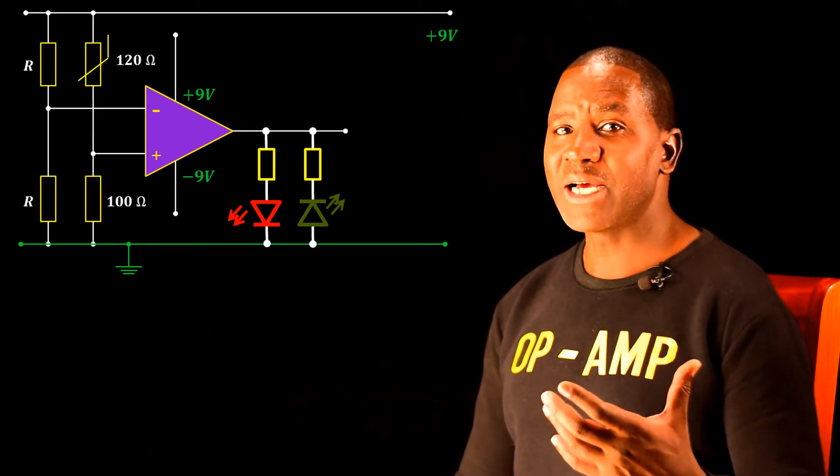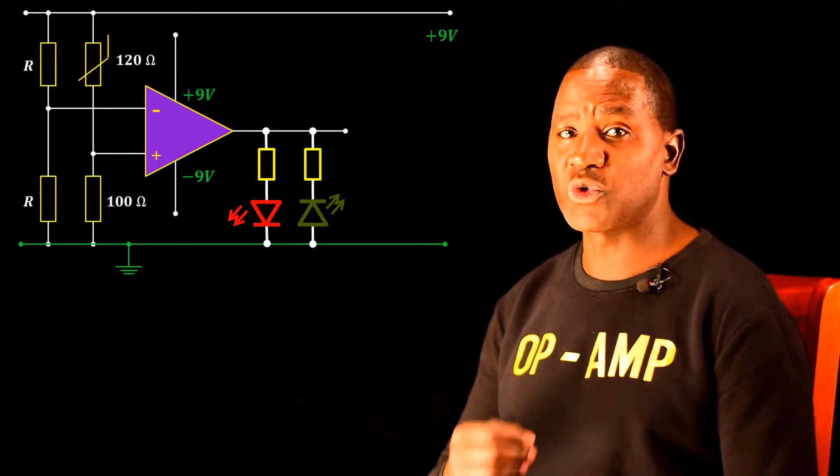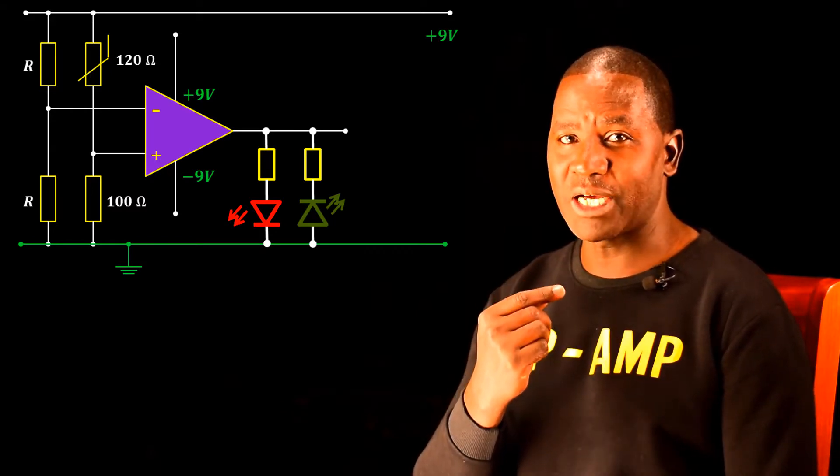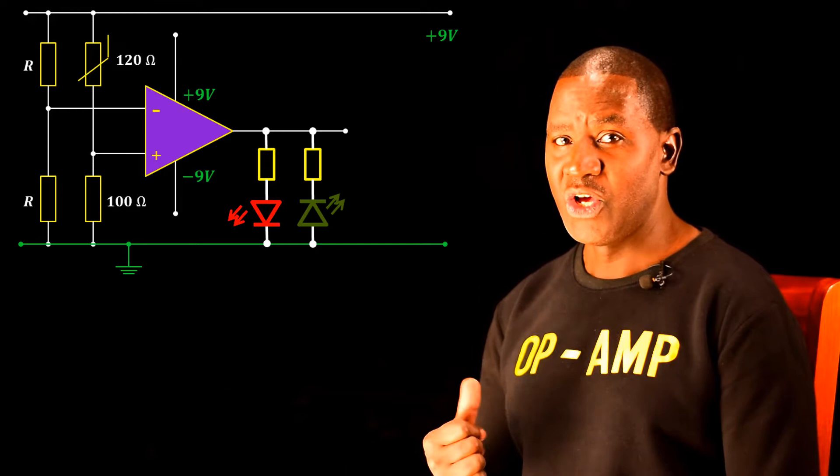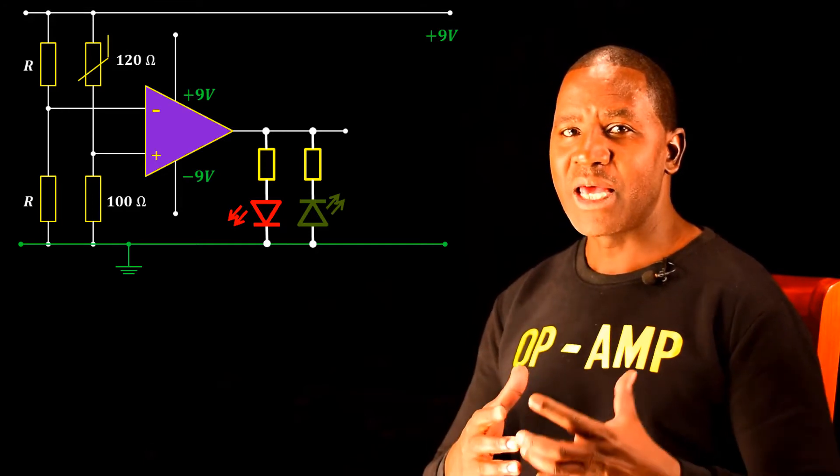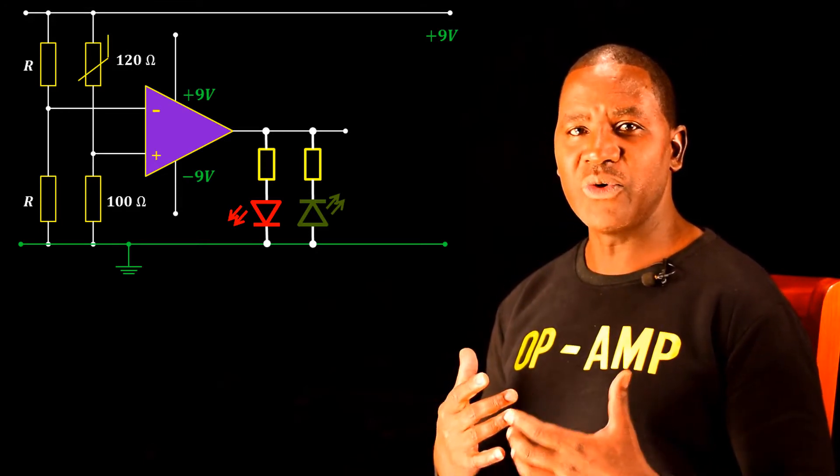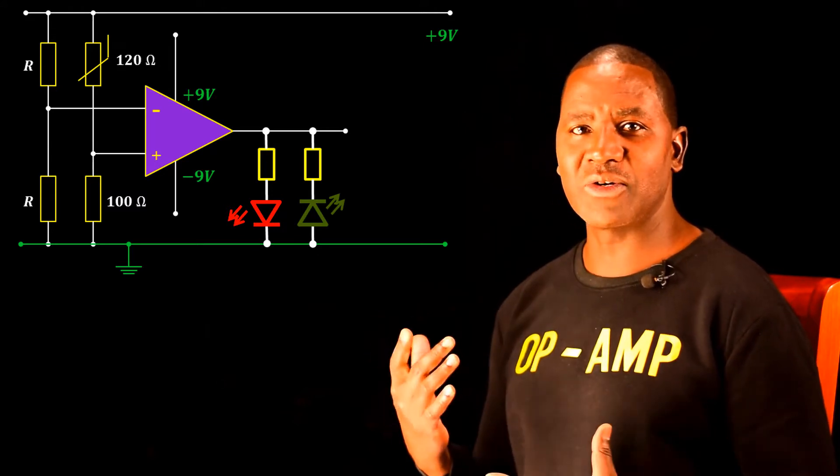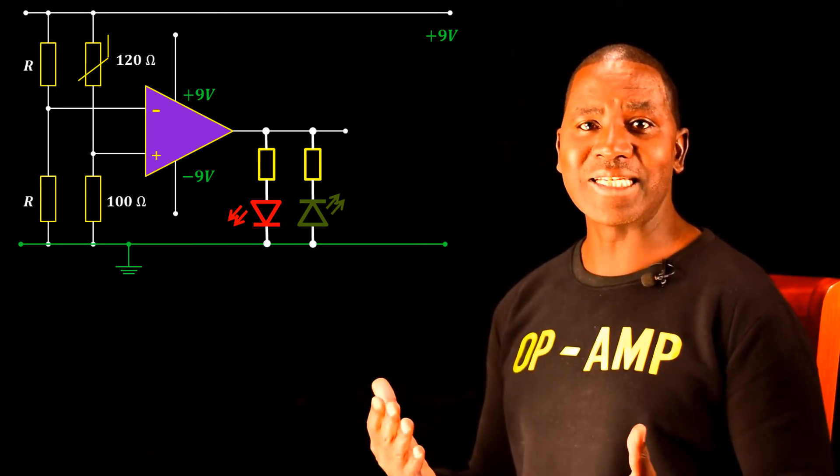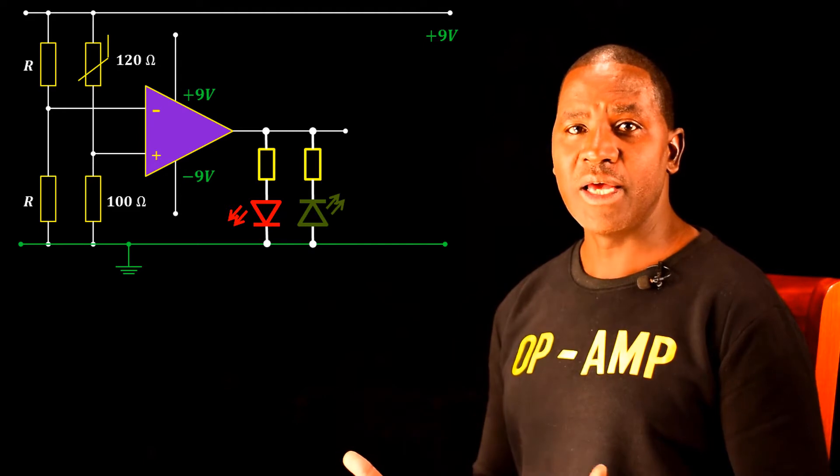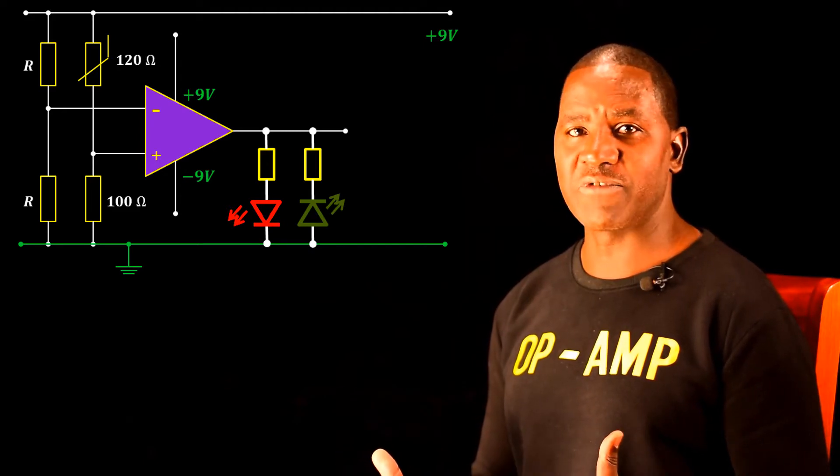Now, they may have done current electricity, which by the way is what I require you to have tackled in order to do this course. You must have done current electricity. But even after doing current electricity, when you look at this circuit for the first time, it is confusing because you can see resistors just criss-crossing, and then there is a component which you've never seen before.